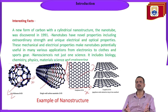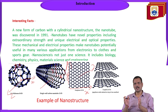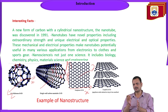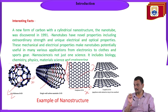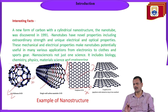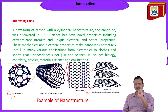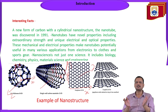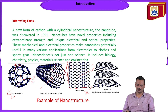Nanoscience is not just one science — it includes biology, chemistry, physics, material science, and engineering. Nanotechnology merges all these branches and studies at the nanoscale, meaning at the 1 to 100 nanometer regime, or at the molecular level — considering the properties of a single molecule or a single atom.